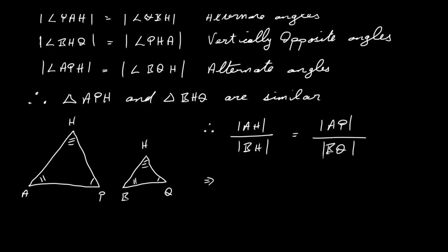All we've got to do now is just cross multiply. Multiply this by this. Multiply this by this. And they're going to be equal. So that would mean that AH times BQ is equal to BH times AP.